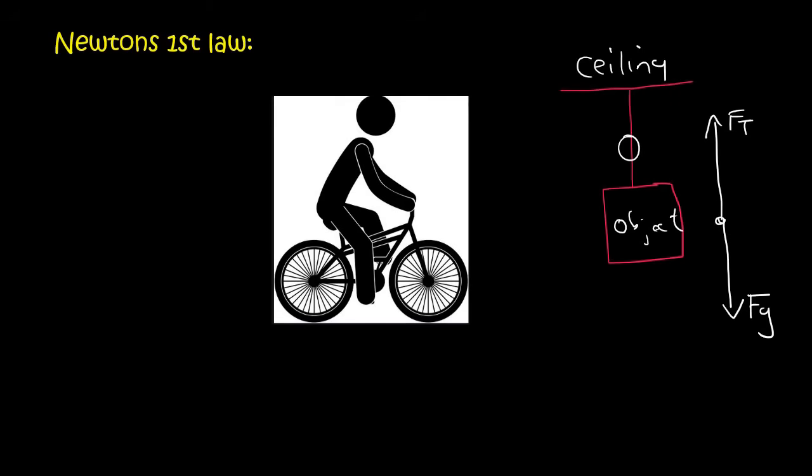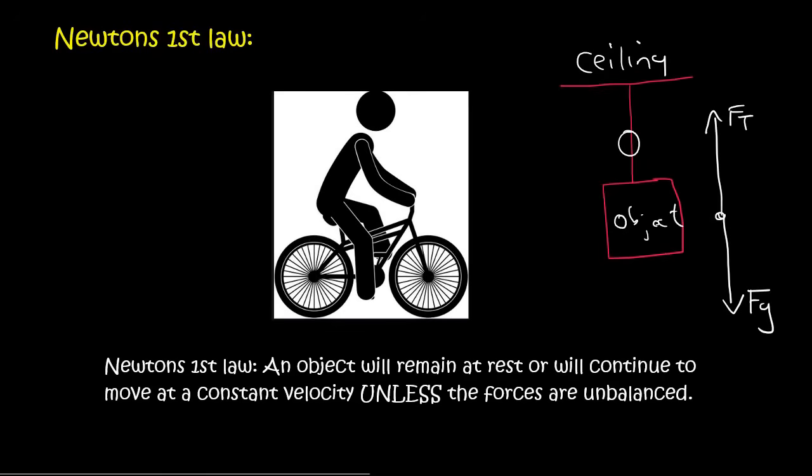If those two forces are balanced, then the object won't move. So we can now summarize Newton's first law. But remember I'm summarizing it in my own words. You need to use the definition that your teacher is giving you. And so here it is, guys. Now remember my definition is very close to the normal definitions. I just like to phrase it in a way that is easy to understand.